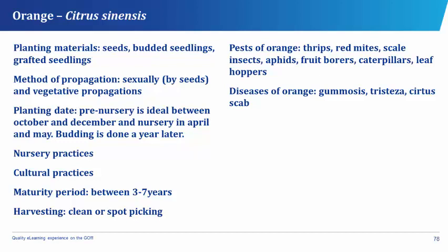In nursery practices for orange, we have the pre-nursery stage where seeds are raised by October to December in a loamy soil rich in organic matter, and seeds are sown 3 centimeters by 3 centimeters at 2 centimeters deep. While in the nursery stage, the seedlings are replanted at 60 centimeters by 60 centimeters spacing around April and May. Watering, weeding, and shading are provided. Budding and grafting are done a year later.